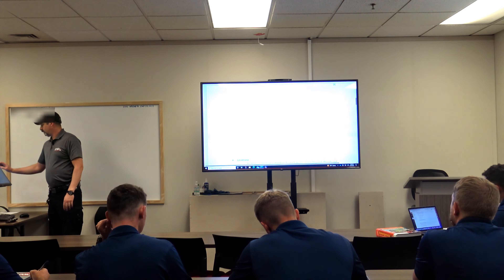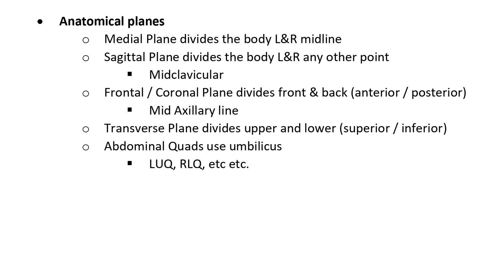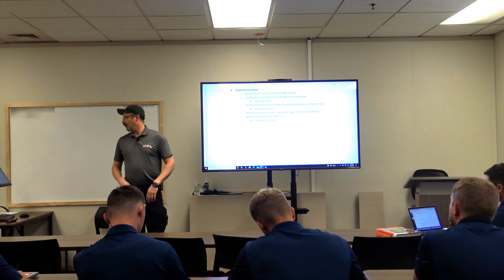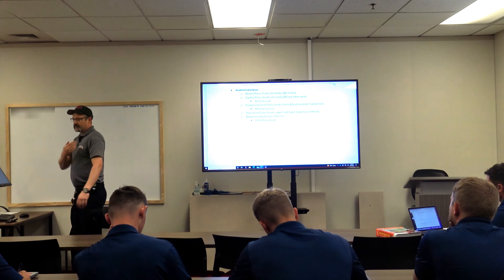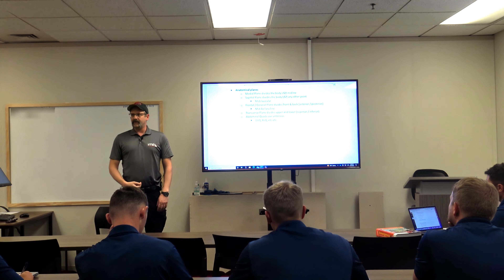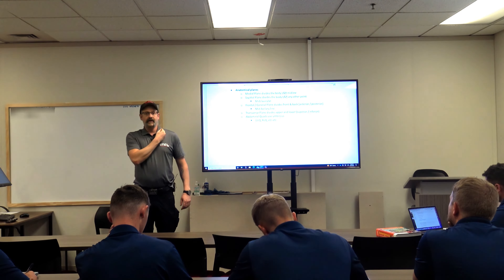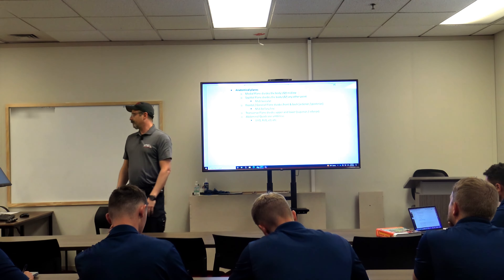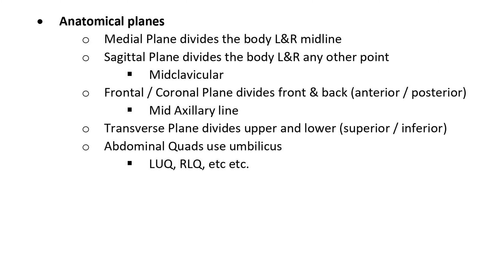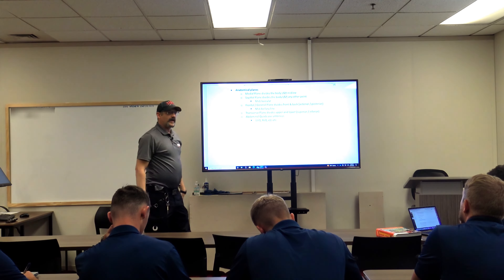Here are our anatomical planes. Your medial plane divides the body into left and right at the midline — it cuts you right down the middle at your belly button, also known as your umbilicus. The sagittal plane can cut you into left and right sections anywhere except the midline. The sagittal planes we use are usually the mid-clavicular line. The frontal or coronal plane divides the body into the front and back, also known as anterior and posterior.